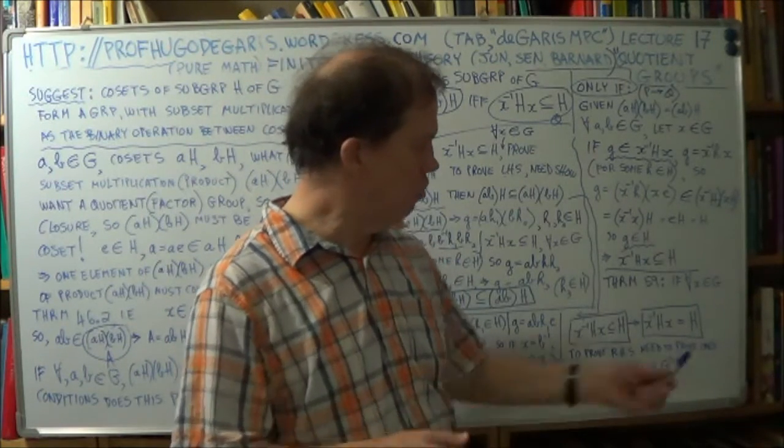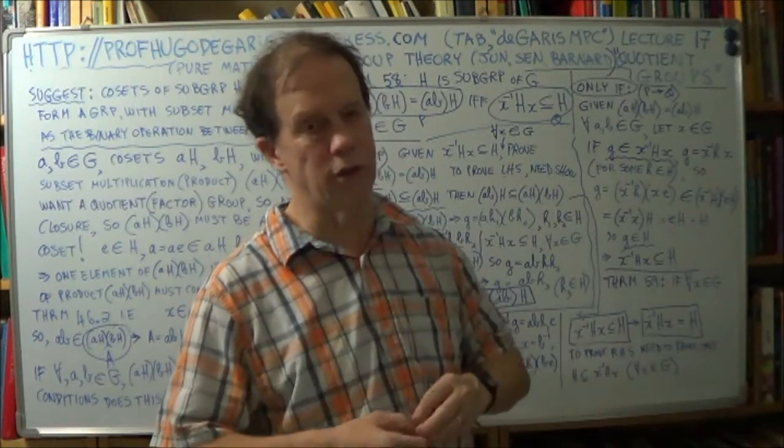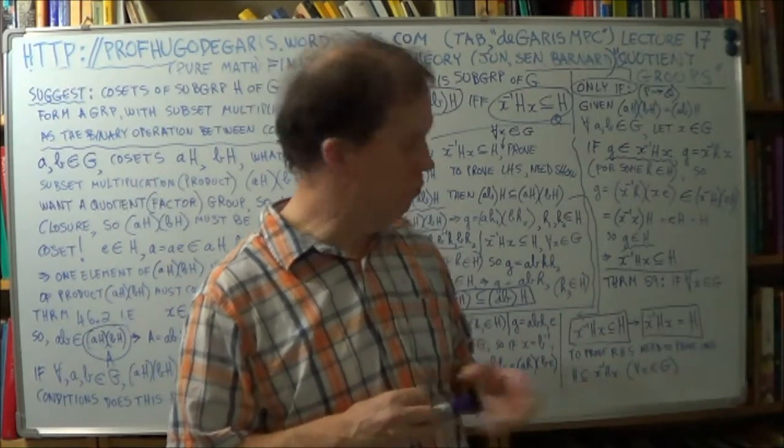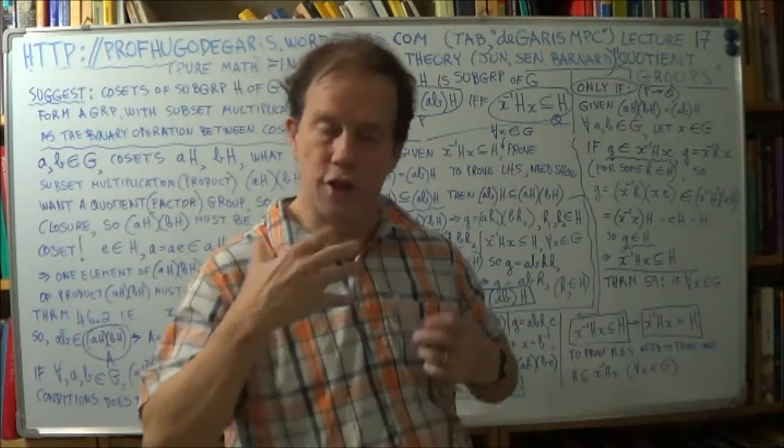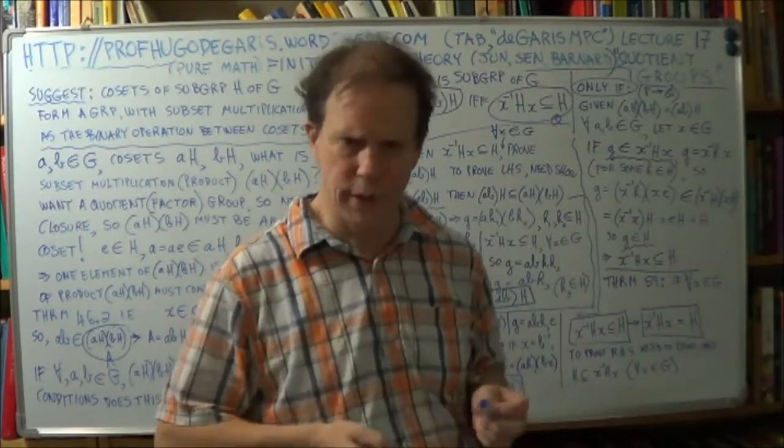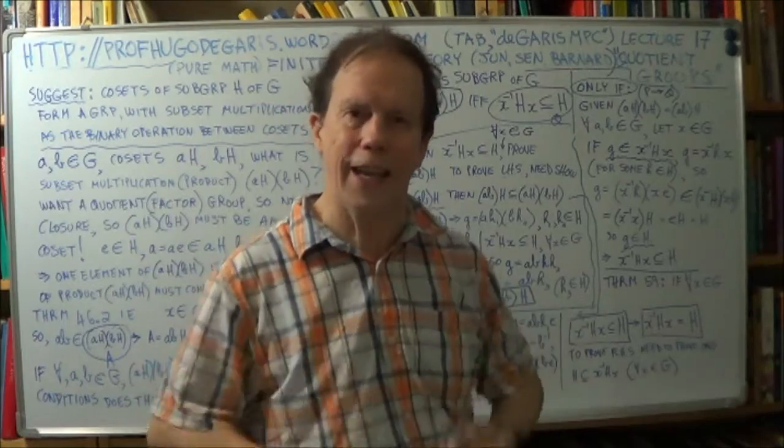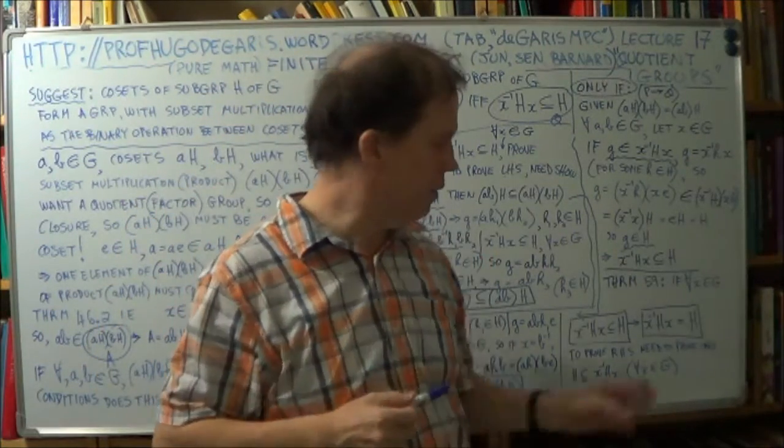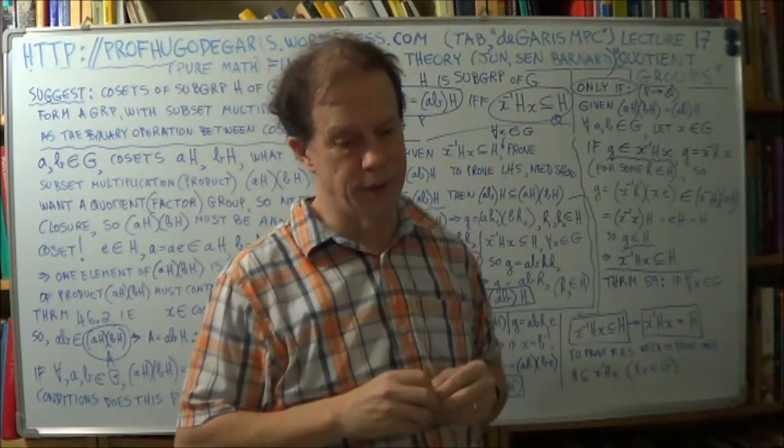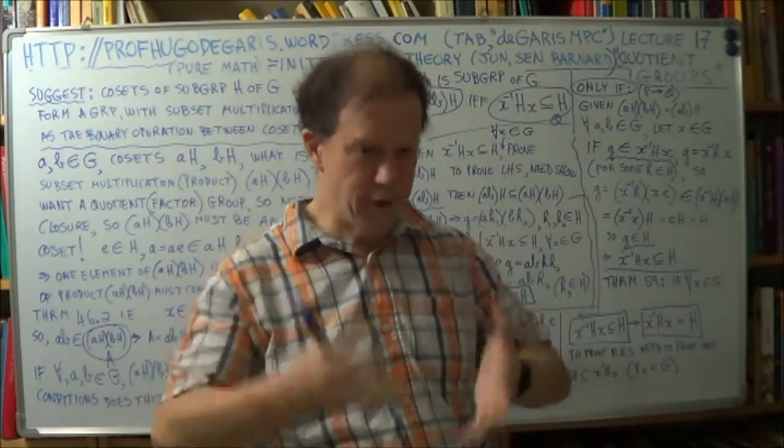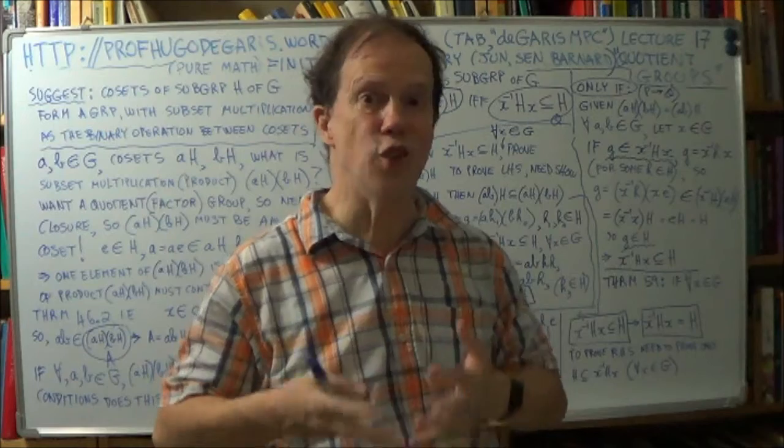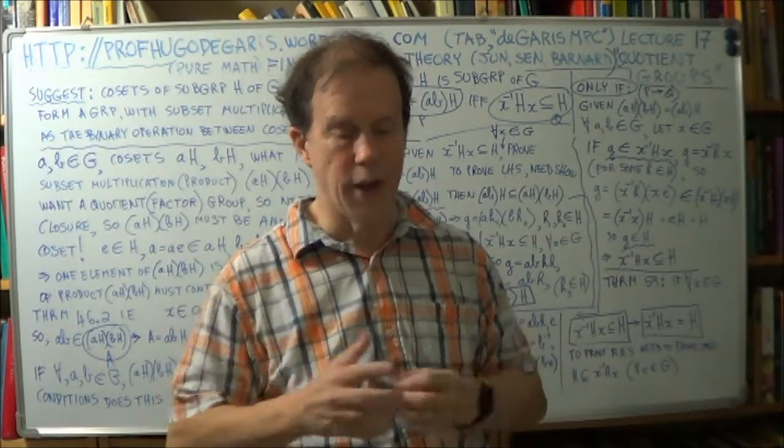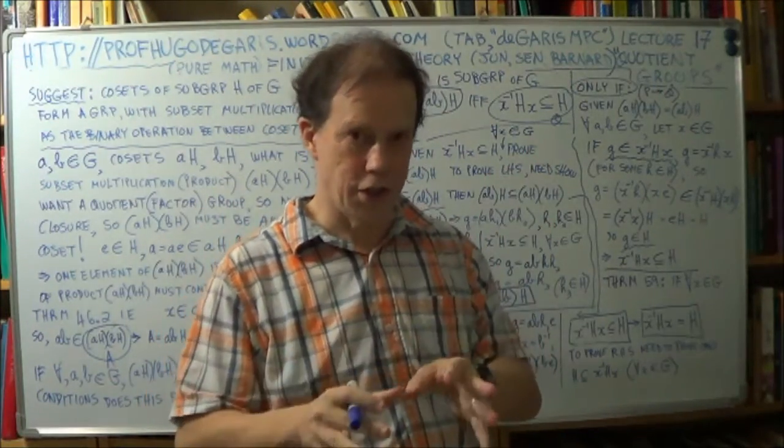And once you know that your subgroup is normal, then you know you can find a factor group, a quotient group, same thing. So really important concept. So you will hear this term. Normal subgroup. Normal subgroup. H is a normal subgroup. You'll hear it again and again and again. It's like one of the pinnacles of finite group theory. This concept of a normal subgroup. Because using it, by having a subgroup that is normal, it means that you can then find quotient groups, factor groups.